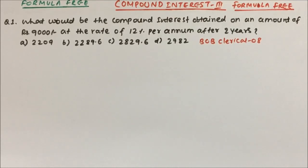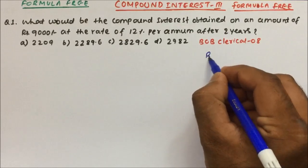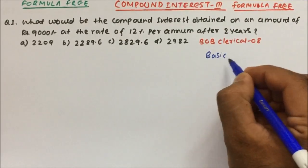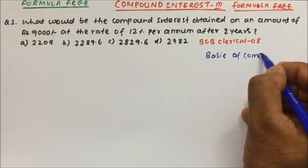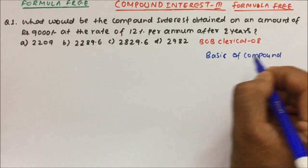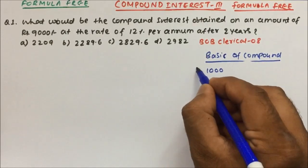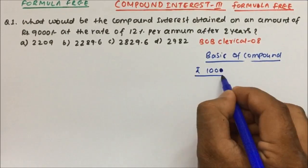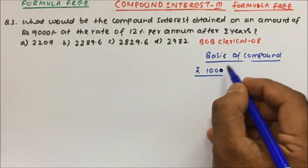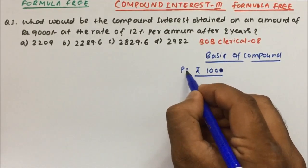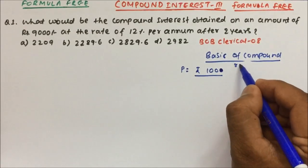Let's see question number one, but before that we need to know the approach — what method we are going to use where formula is not involved. So what we are going to do is apply the basics of compound interest. Suppose you have 100 rupees that you are going to invest — whatever amount you invest becomes your principal.